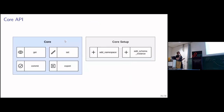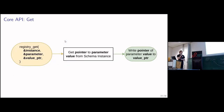We have get and set from the core API, plus functions to add a namespace, registry, or registry schema instance. Starting with get: you basically just provide the pointer to the instance, the pointer to the parameter schema metadata, and an output pointer for the value. The registry calls the mapping function in the schema with this data, finds the pointer to your value, and returns the pointer, so you can access your value.